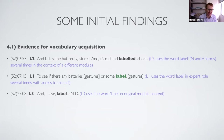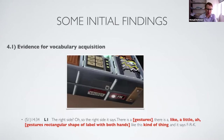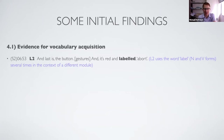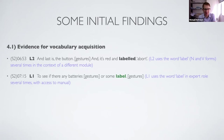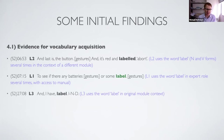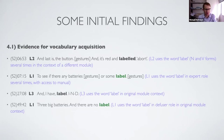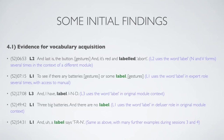Shortly afterwards, learner one — who previously couldn't think of this word — uses the word 'label' as well, this time in the expert role where she can see the word in the manual. Later on, learner three also uses 'label,' and then learner one, now back in the defuser role where she can't see the manual and hasn't recently heard anyone modeling the word, uses it spontaneously. We see many further examples of spontaneous use in sessions three and four, suggesting vocabulary acquisition.